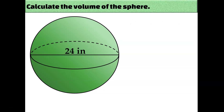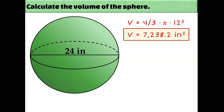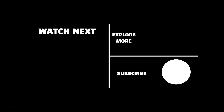Remember to cut the radius in half if you're given a diameter instead of a radius. Our formula would look like this: volume equals four-thirds times pi times 12 to the third power, so the volume of the sphere would be 7,238.2 cubic inches. And that's all you need to know about calculating the volumes of pyramids, cones, and spheres. In our next video we'll be discussing how to calculate the volumes of composite solids.